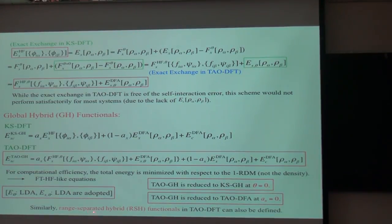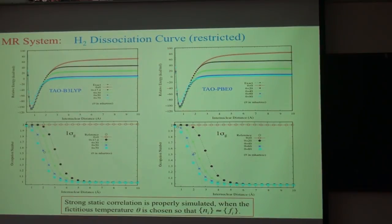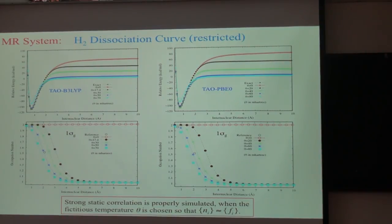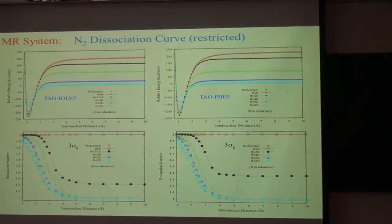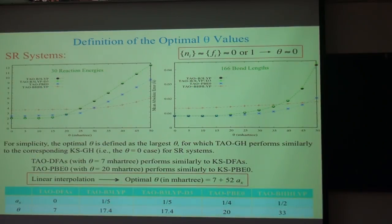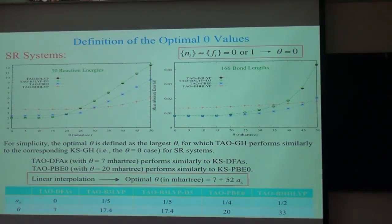We can also extend this scheme to range-separating hybrid functionals. For H2 dissociation, tau B3 and tau PBE0 are hybrid functionals in tau DFT. Strong static correlation can also be properly simulated when the fictitious temperature theta is sufficient, so that natural orbital occupation numbers are approximately reproduced by tau GH. A similar result is obtained for N2, and for single-reference systems the effective temperature should again be small. The optimal theta is defined as the largest theta for which tau GH performs similarly to the corresponding KS GH.